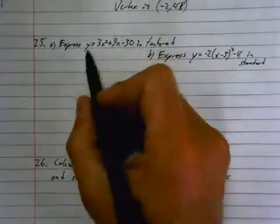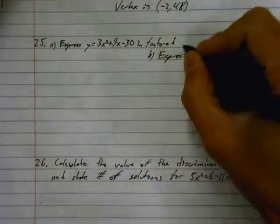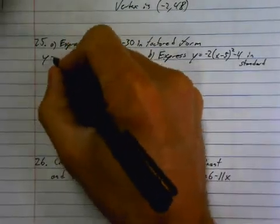25. Express y equals 3x squared plus 9x minus 30 in factored form. Okay, well, to express it in factored form, we'll factor it.